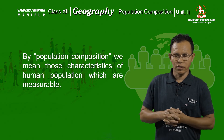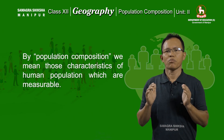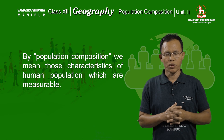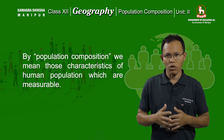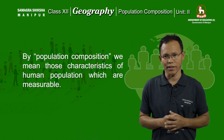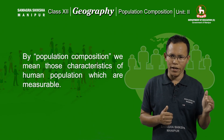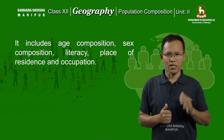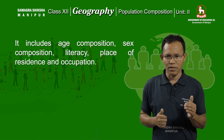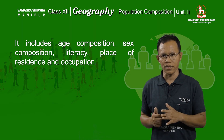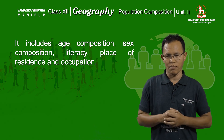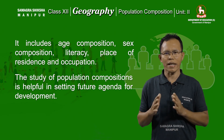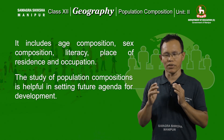By population composition, we mean all those population characteristics — all the characteristics of human population — which are measurable and also helpful in comparing or distinguishing one group of population from another. It includes age composition, sex, literacy, place of residence, and human occupation. The study of population composition is very important for setting a future agenda of development.